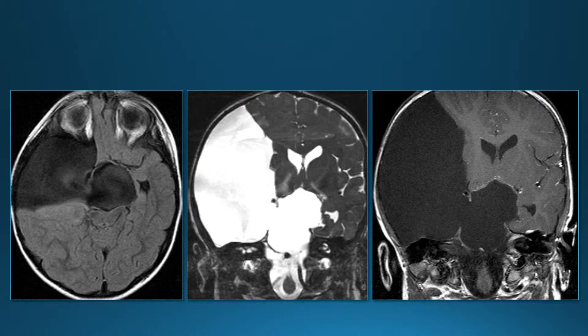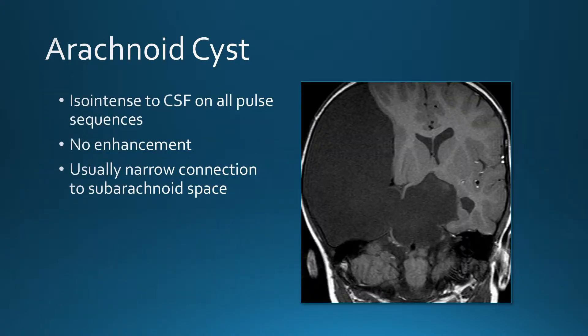There's a large cyst iso-intense to CSF on all pulse sequences — typical appearance of an arachnoid cyst. The key here is they're iso-intense to CSF on all pulse sequences, with no enhancement. They typically have a narrow connection to the subarachnoid space, so if you instilled contrast through a myelogram they would not fill immediately but would fill with contrast over time.